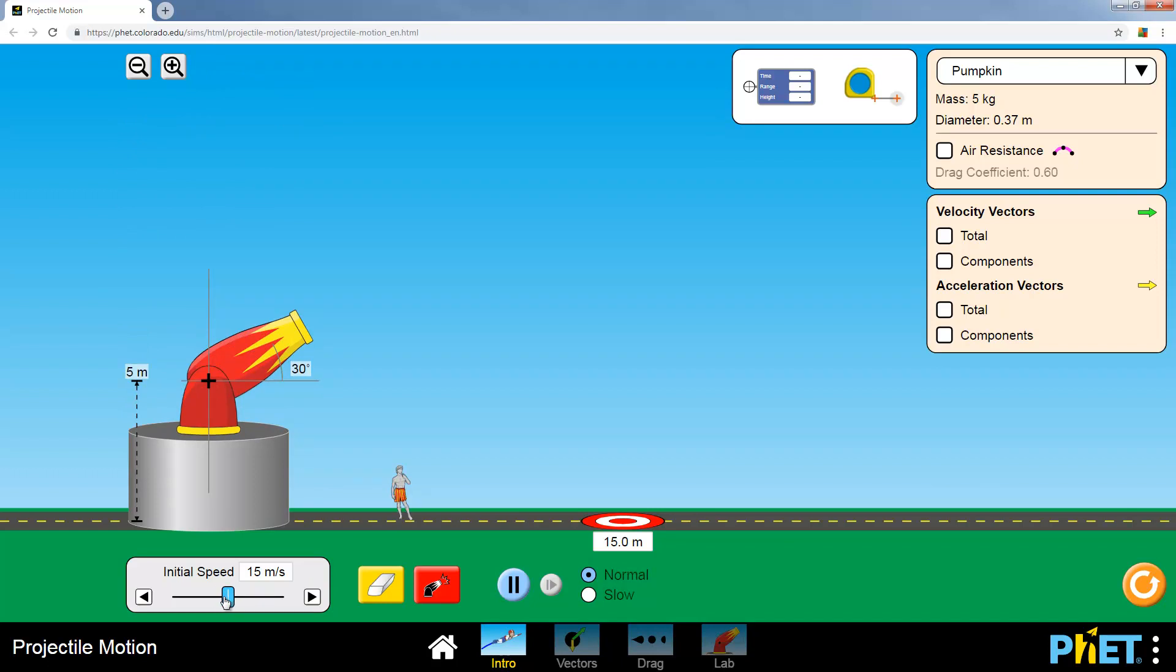And this is the initial speed. Now if you have the speed too low, like 4 meters per second is pretty short, and you fire it, notice that it doesn't even get out of the cannon. So that's how you can erase. So if you have something in more like the 15, 16 range, it's going to give us data that's usable. So maybe I'll put it on 15.